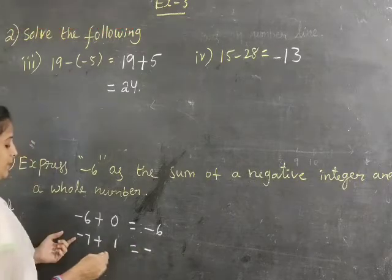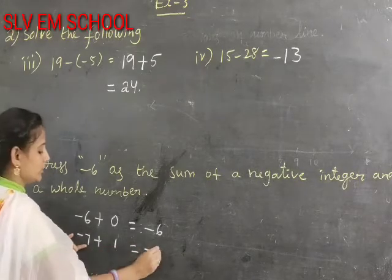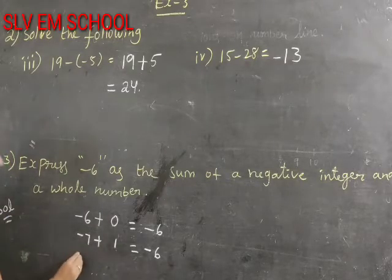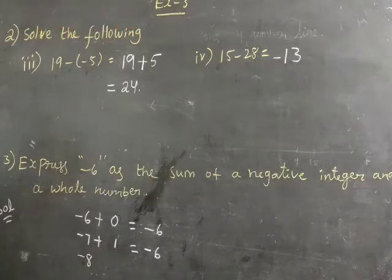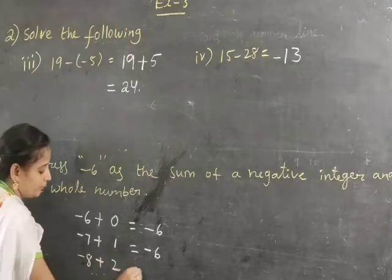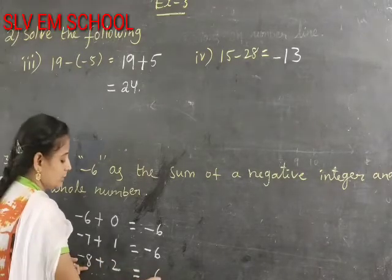Next: minus 8 plus 2 equals minus 6. Minus 8 negative integer, next whole number is 2. Minus 8 minus 2 equals minus 6.